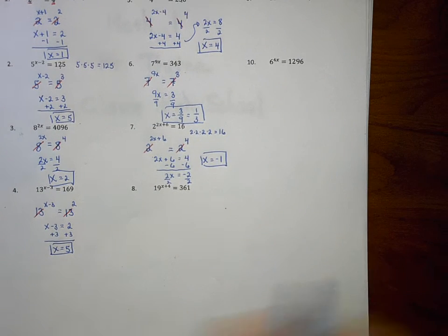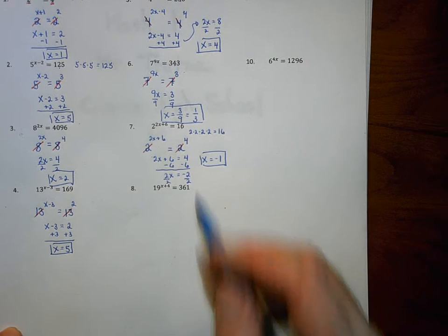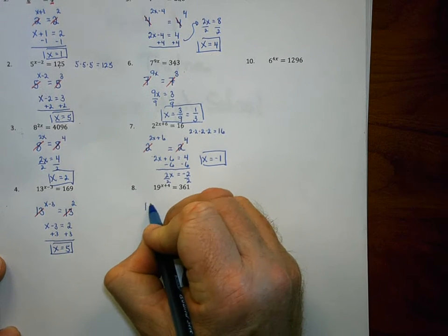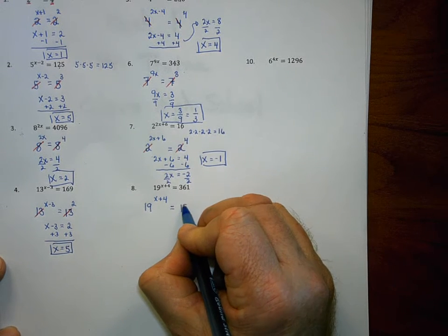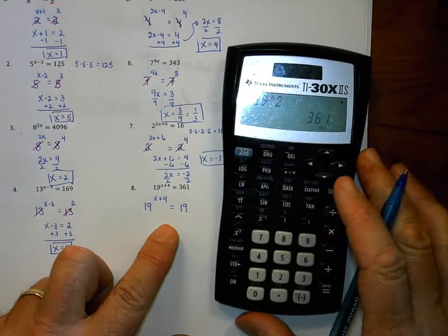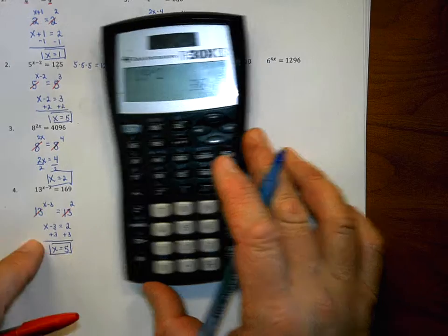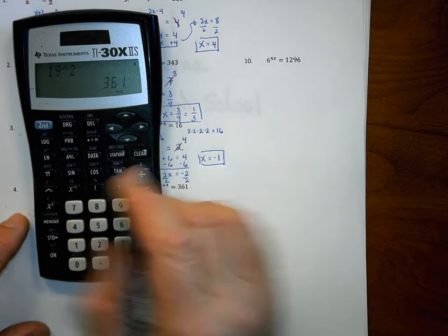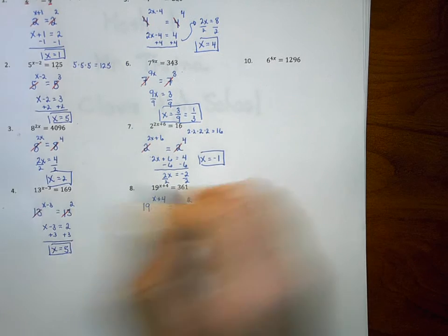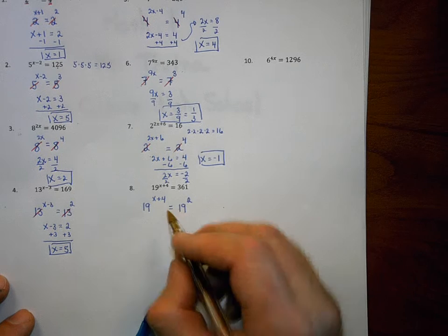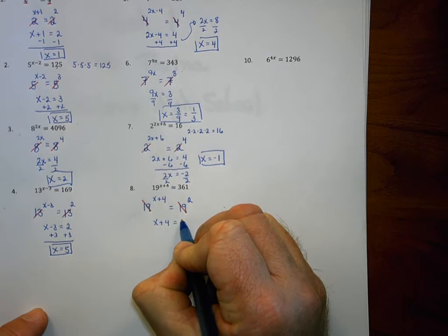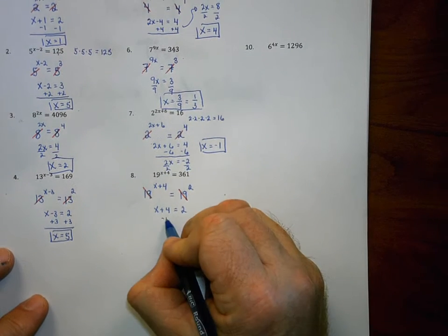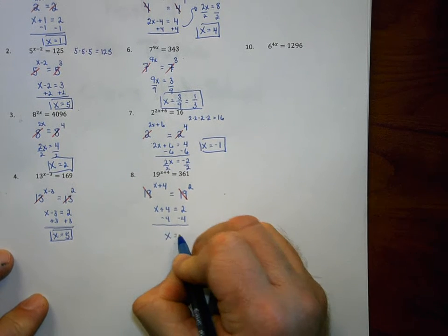Number 8 is a bit more challenging because it deals with a base of 19, which is not a common base. The side with 19 is smaller, so we leave 19 to the power of x plus 4 alone, and check if 361 is a power of 19. 19 to the 2nd power is 361, so we change 361 into 19 to the 2nd power. Once the bases cancel, the equation is x plus 4 equals 2. Subtracting 4 from both sides, the solution is x equals negative 2.